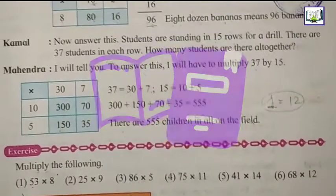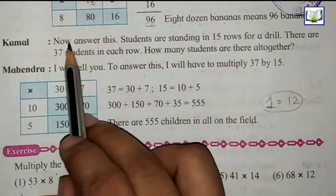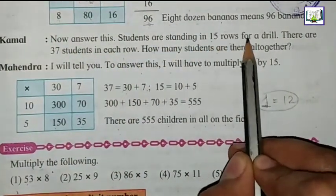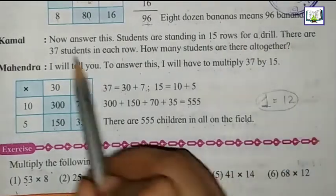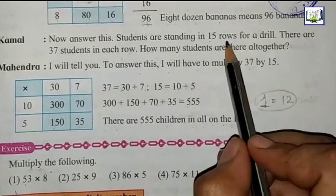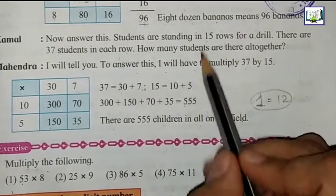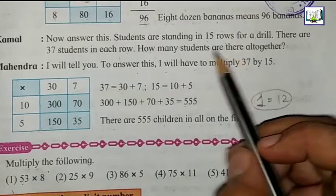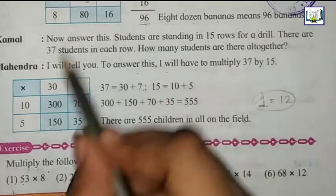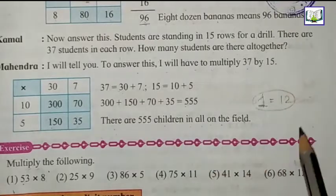Let's see the second question. Kamal, now answer this. Students are standing in 15 rows for a drill. There are 37 students in each row. How many students are there altogether? Mahindra said, I will tell you. To answer this, I will have to multiply 37 by 15.